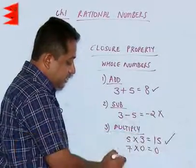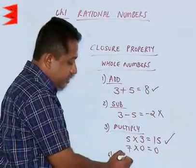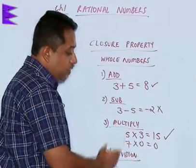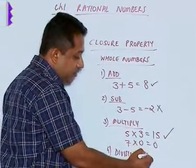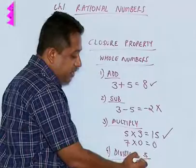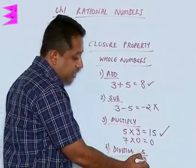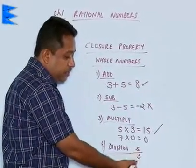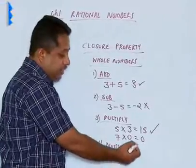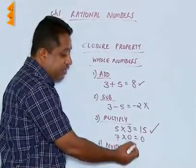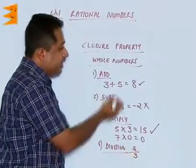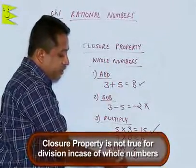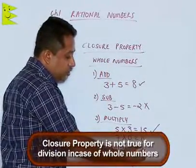Lastly, let us check for division. When we divide two whole numbers, let us say 5 divided by 3, we are going to get 5 upon 3. Now, 5 upon 3 is not a whole number — it is a fraction, which is a rational number. So I can say that the closure property for division also does not hold good.